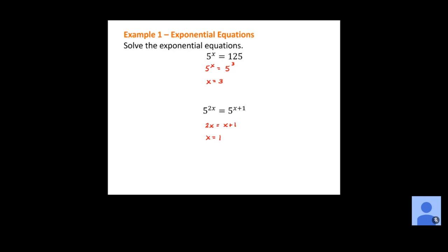You can always take these values and substitute them back in to double check your answers. This one will be 5 to the 2 times 1 equals 5 to the 1 plus 1 — that's 5 squared equals 5 squared, which is true. And the same thing for the previous one: if we substitute the 3 back in, that gives us 5 to the 3rd power, which equals 125.